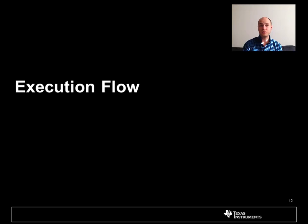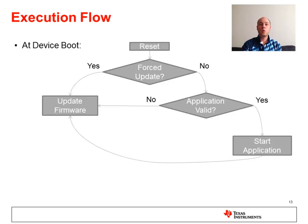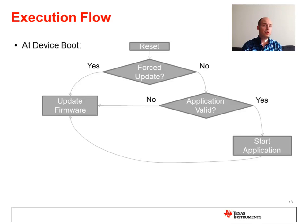Now that we know what's inside the bootloader, let's take a look at the typical execution flow from reset. When the device is reset, the first thing it should execute is the bootloader. In some cases, the user may want to force an update, so it's a good idea to have the bootloader check a GPIO to allow the user in the field to force an update. Next, if an update has not been forced, the bootloader will typically check the validity of the application by checking the application entry point and a checksum or CRC of the application code. Finally, if the checks pass, the application is branched to and executed.